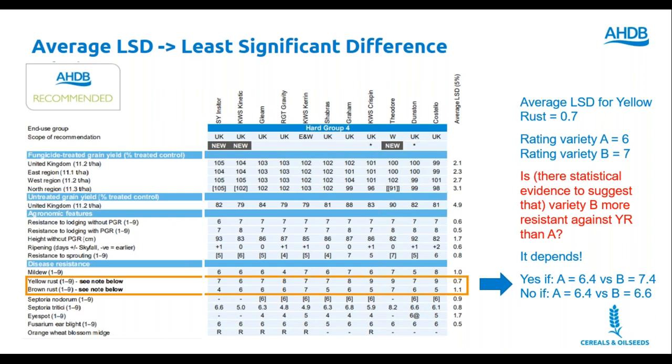That difference is larger than the LSD value. And therefore, yes, in that scenario, A and B are different. Therefore, you could arguably say that B is better for yellow rust resistance. However, if the actual values for variety A and B are 6.4 and 6.6, then the value difference there is only 0.2. Therefore, it's less than the LSD. Therefore, these varieties should be considered as having the same yellow rust resistance.